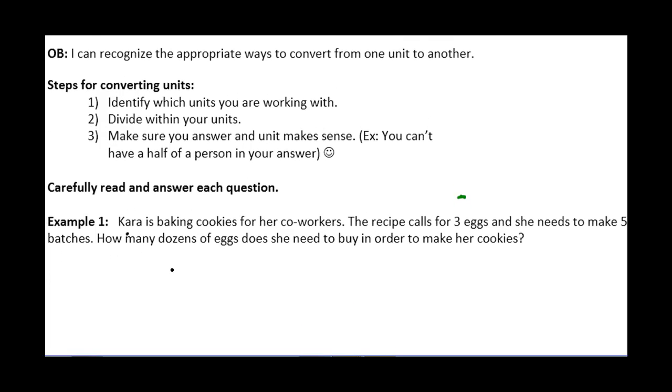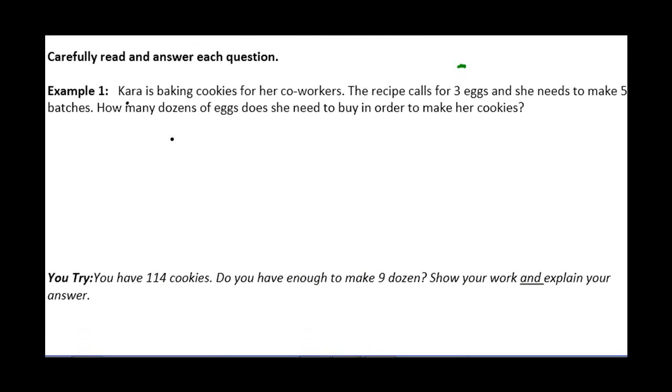Carefully read and answer each of the questions below. The first one we're going to look at is Example 1. Kara is baking cookies for her coworkers. The recipe calls for three eggs and she needs to make five batches. How many dozens of eggs does she need to buy in order to make her cookies?